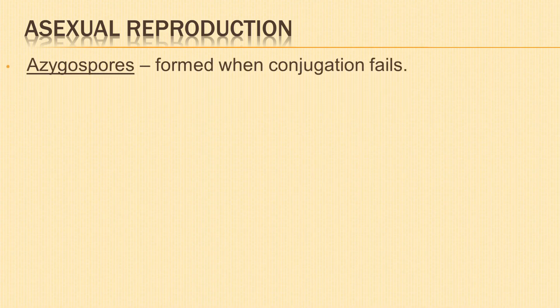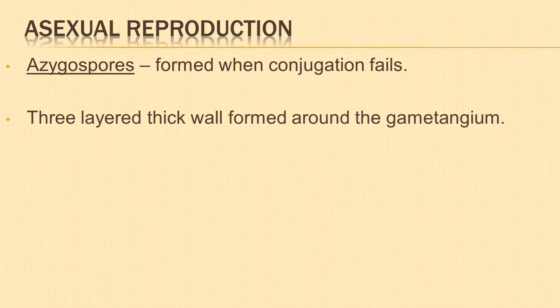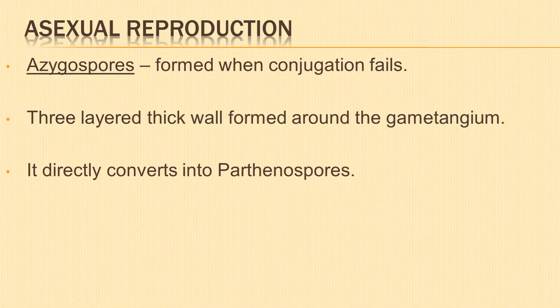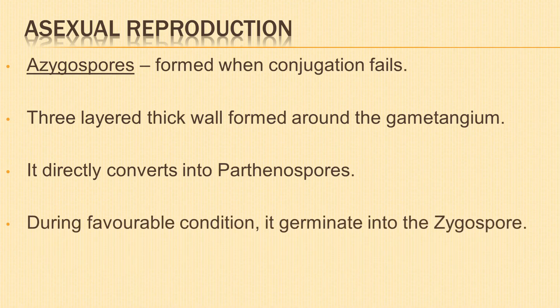Azygospores or parthenospores are formed when conjugation between two filaments does not occur. In this case, a gametangium surrounds itself with a thick, three-layered wall structure that is resistant to cold and drought. It is directly converted into parthenospores, and during favourable conditions it germinates like the zygospore.